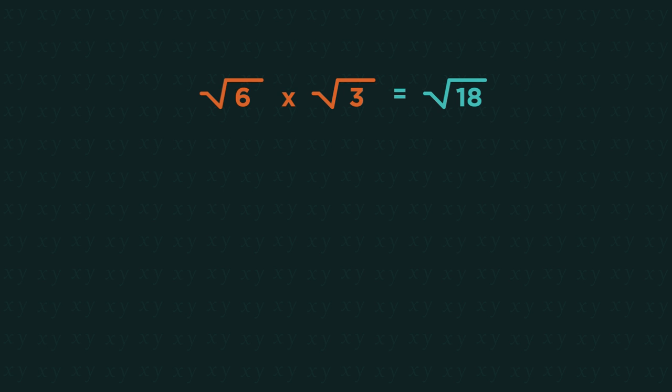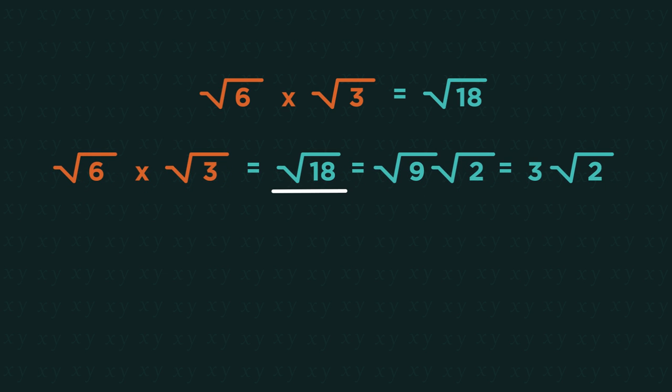Root six and root three are as simplified as they can be on their own, but root eighteen can then be simplified down into root nine root two, which is three root two.